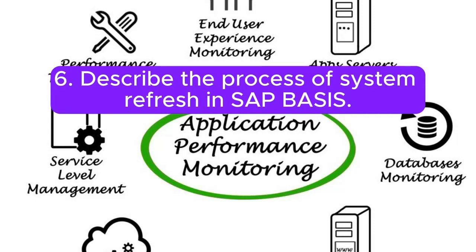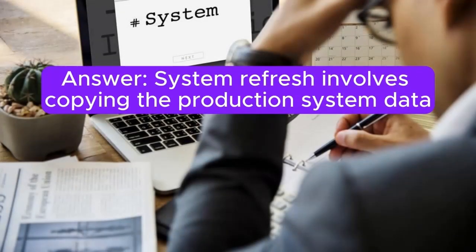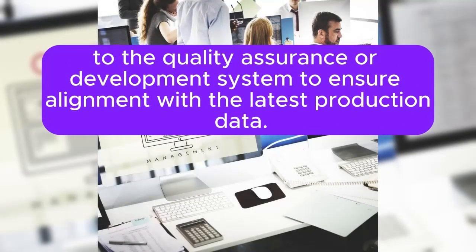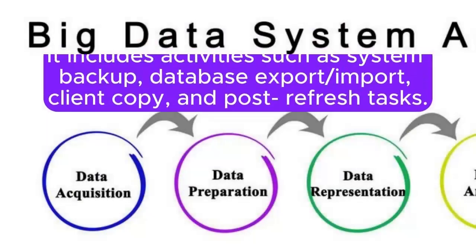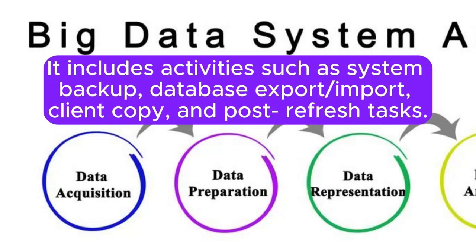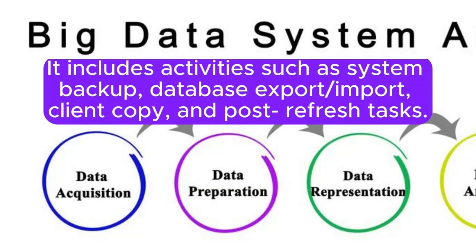Question 6: Describe the process of system refresh in SAP BASIS. System refresh involves copying the production system data to the quality assurance or development system to ensure alignment with the latest production data. It includes activities such as system backup, database export or import, client copy, and post-refresh tasks.